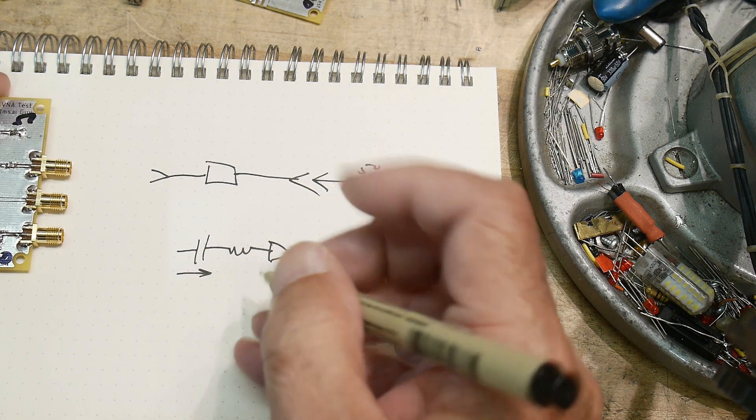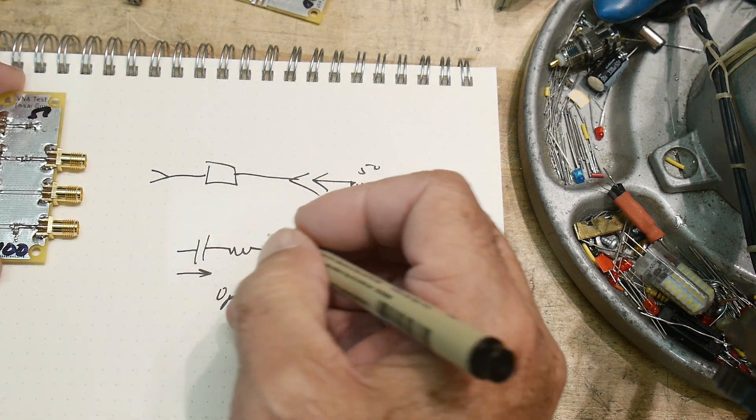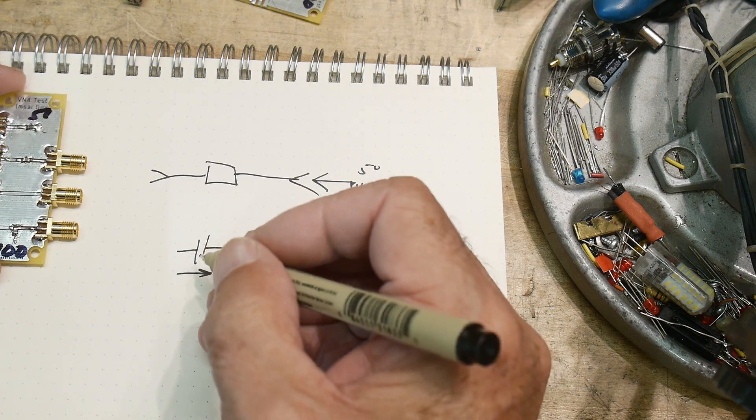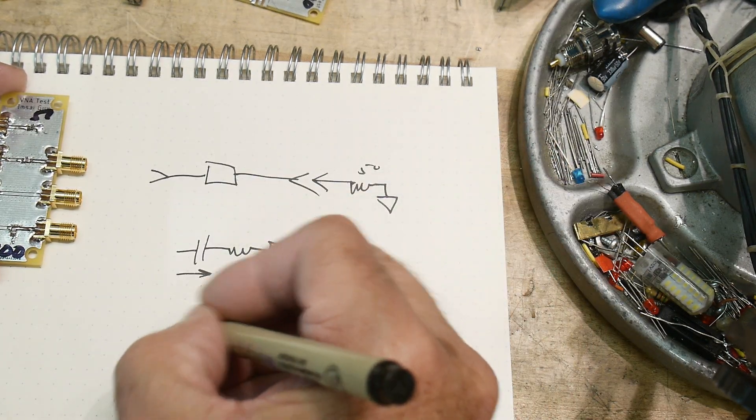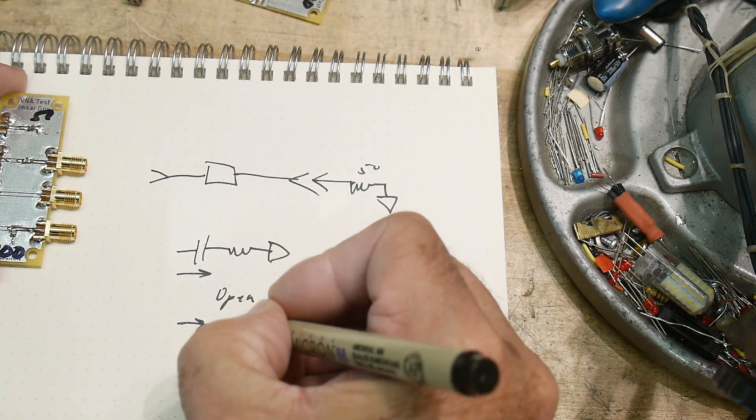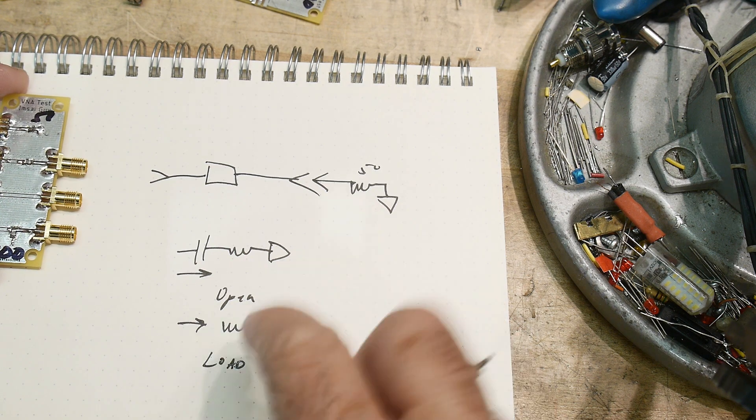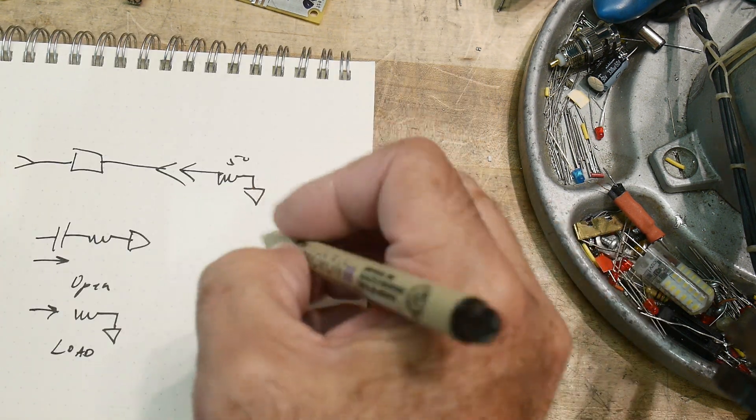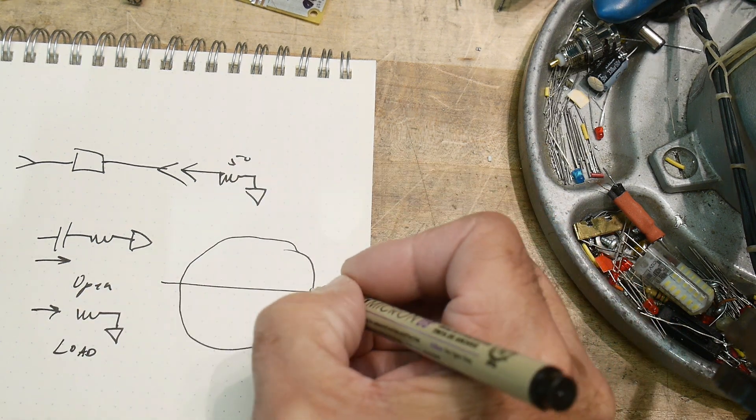As we go higher and higher in frequency, the capacitor will look like a short, and then what we have here is just a resistor. This would be a load. So we have an open and a load, and on a Smith chart an open is here and the load is here.